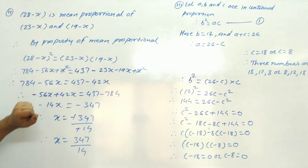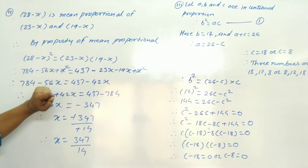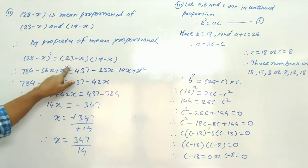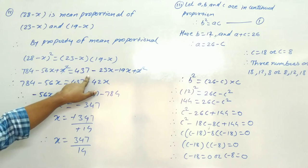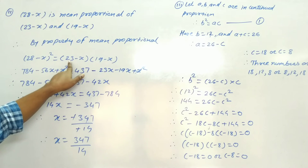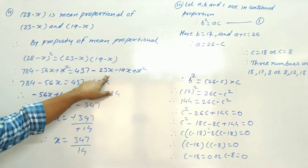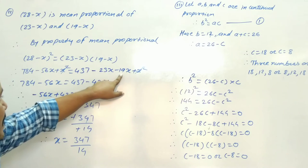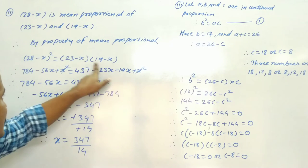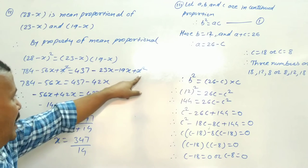Now expand (28 minus x) squared: 784 minus 56x plus x squared is equal to 23 into 19, which is 437, minus 23x minus 19x plus x squared.